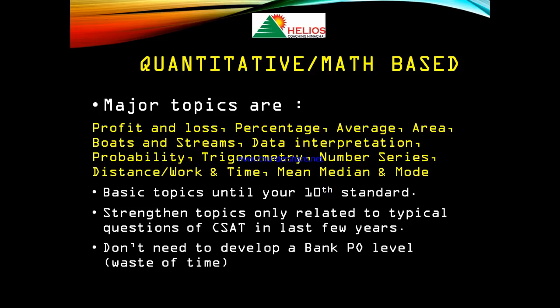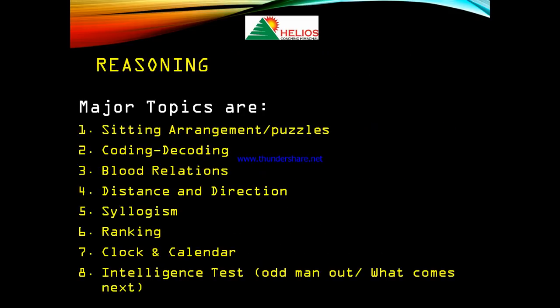The next topic is reasoning. Reasoning is the most interesting and scoring section of your CSAT exam. The questions are at a very manageable level — you have basic questions to deal with.